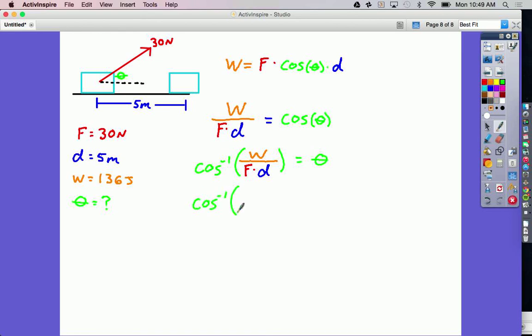So I have my inverse cosine. My number for work is 136 joules. The force is 30 newtons. And the distance is 5 meters. So when I plug all those numbers into my calculator, what I find is that she has to be pulling at 25 degrees to make this happen.